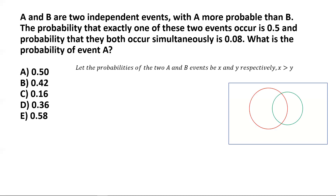Event A is represented by the red circle and event B by the green circle. The area outside both circles, which I've indicated in stripes, is not of interest in this particular problem. So let's focus on the circular areas and their different sections.